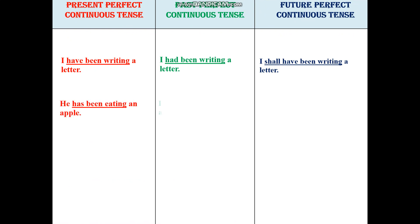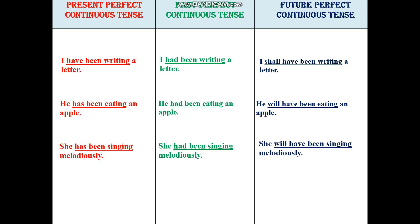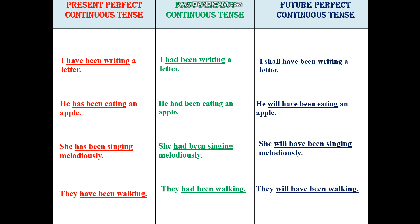He has been eating an apple. He had been eating an apple. He will have been eating an apple. She had been singing melodiously. She will have been singing melodiously. They have been walking. They had been walking. They will have been walking. In this form, we see the usage of 'have been' plus verb plus -ing, or 'had been', or 'will have been' / 'shall have been'. With this, we finish the comparison.